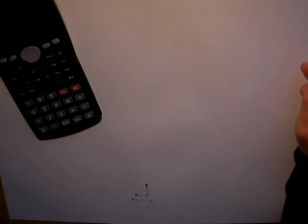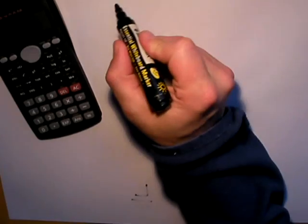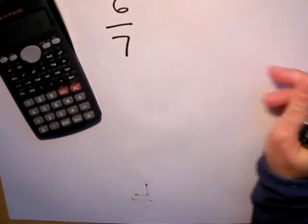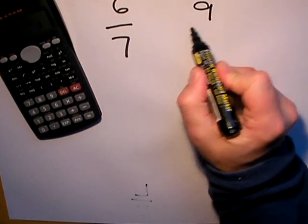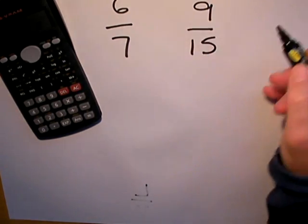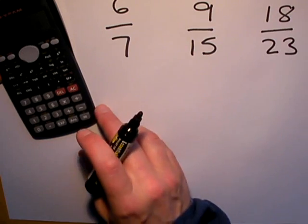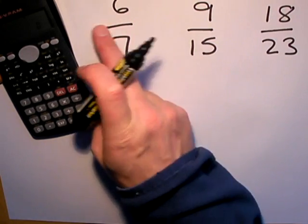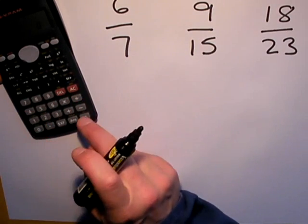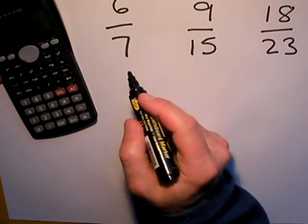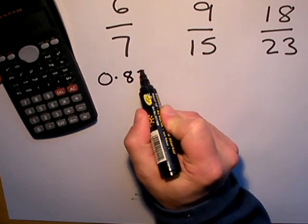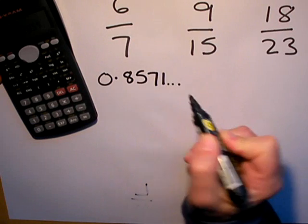So there's my calculator, and I'm going to try and change some more difficult fractions such as 6/7, 9/15, and 18/23. Now to change each of those fractions into a decimal and into a percentage, I'm going to have to use a calculator. So first I'm going to work out 6 divided by 7, because of course 6 over 7 means 6 divided by 7, and that gives me 0.8571. Well, it goes on for an awful long time after that.